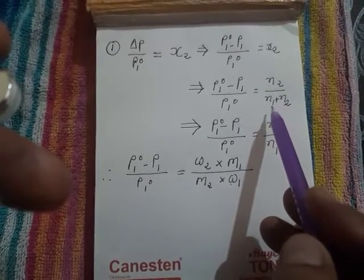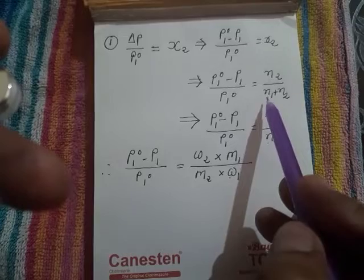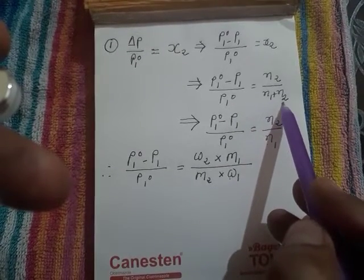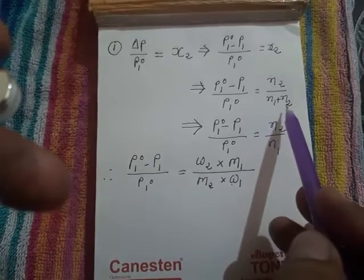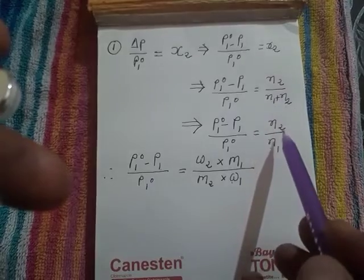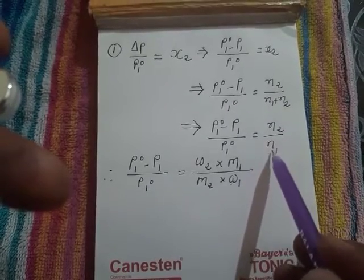As we know that solution is ideal and dilute, moles of solvents are more with respect to moles of solute. So, moles of solute can be neglected in the denominator, so this formula further simplified to N₂ by N₁.